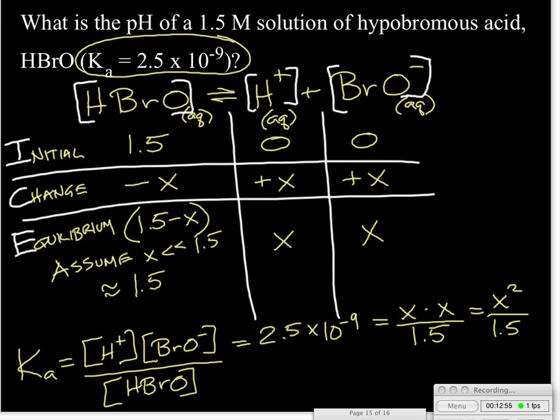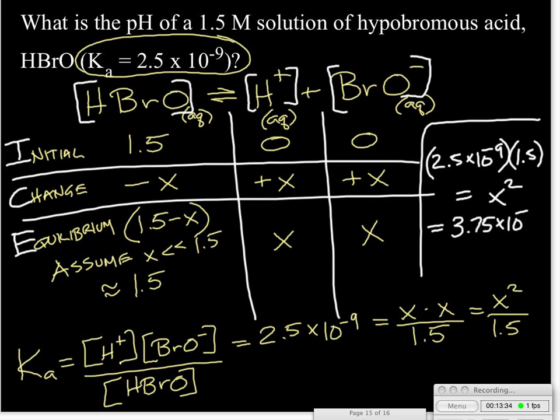At this point, it's pretty easy to rearrange this to say, if we take our 2.5 times 10 to the minus ninth and multiply that by 1.5, that will equal X squared. So we have that X squared is equal to 3.75 times 10 to the minus ninth, meaning that X, take the square root of that, X will equal 6.12 times 10 to the minus fifth.